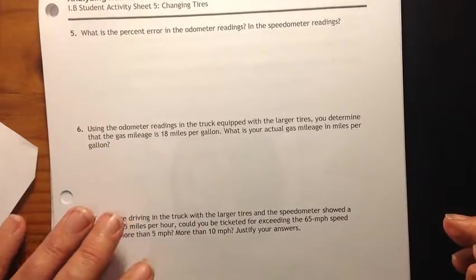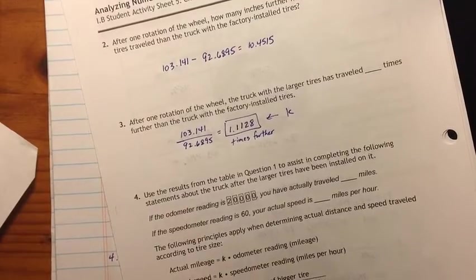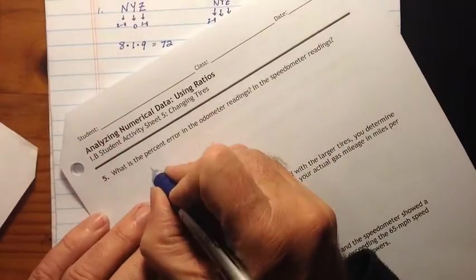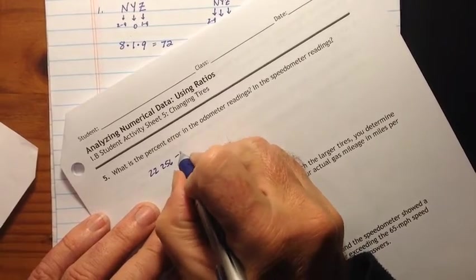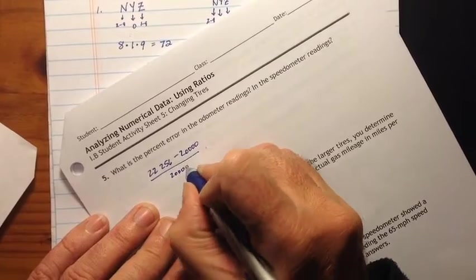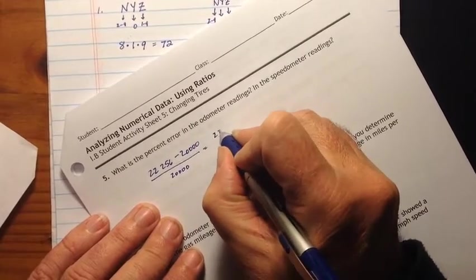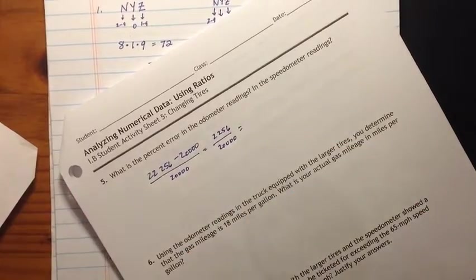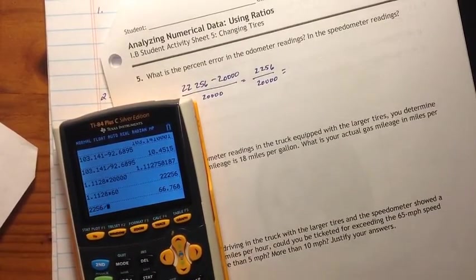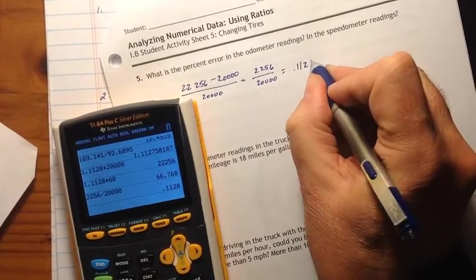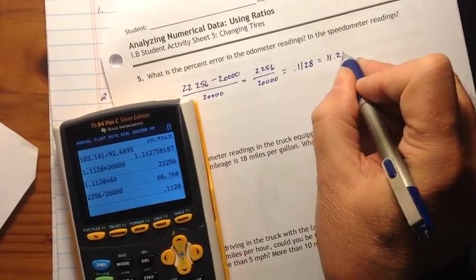Number five. What is the percent error in the odometer reading? Well, it's reading 20,000. It should be 22,256. So if I do 22,256, I'm going to subtract 20,000, and I'm going to divide by the original, which is 20,000. So this is going to be 22,256 divided by 20,000. 22,256 divided by 20,000, and I get 0.1128, or 11.28%. That's how much it's off.